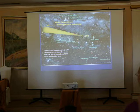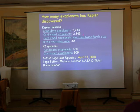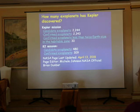Therefore, they detected around 4,000 planets, more or less, and in the habitable zone — meaning the places where life could be possible — they detected 30 planets.